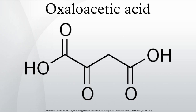Biosynthesis: Oxaloacetate forms in several ways in nature. A principal route is upon oxidation of L-malate, catalyzed by malate dehydrogenase. It also arises from the condensation of pyruvate with carbonic acid driven by hydrolysis of ATP — occurring in the mesophyll of plants, proceeding via phosphoenolpyruvate, catalyzed by pyruvate carboxylase. Oxaloacetate can also arise from degradation of aspartic acid.